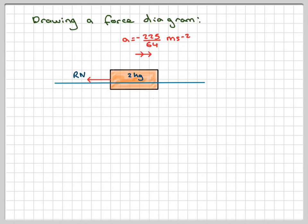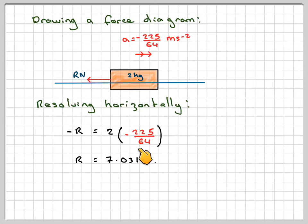Then if we resolve that horizontally, we've got no force this way, but we've got a negative force that way, so minus R is equal to mass, which is 2 times the acceleration, which is minus 225 over 64. So the minus signs cancel out, and we get that R is 2 times 225 over 64, which gives you 7.031, and therefore a resistance of 7.03 newtons.